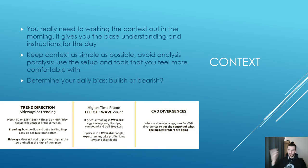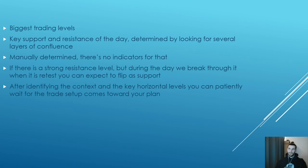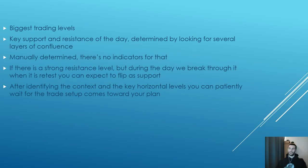For important levels, the simplest approach is golden pocket fibs on local and global timeframes, POCs on the daily, weekly, and monthly — which can also be naked POCs — horizontal levels, and value areas. There is no single biggest trading level; every level is determined by context. Sometimes a naked POC is more important than a horizontal level; sometimes a golden pocket is more important than a volume level.